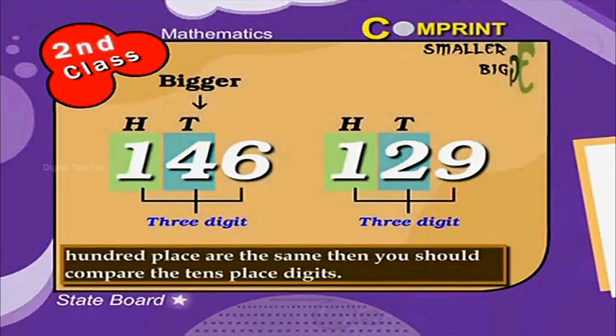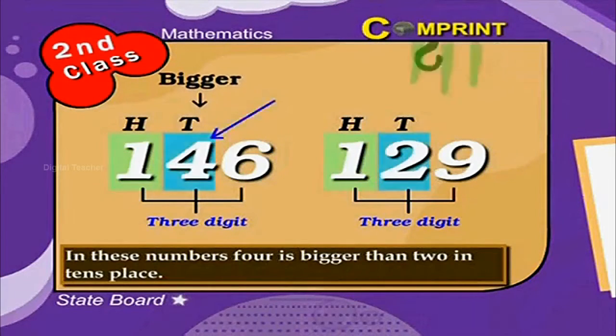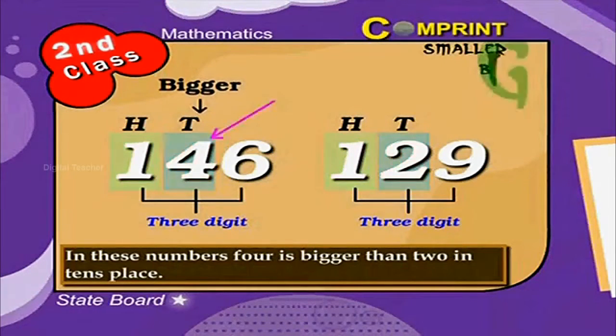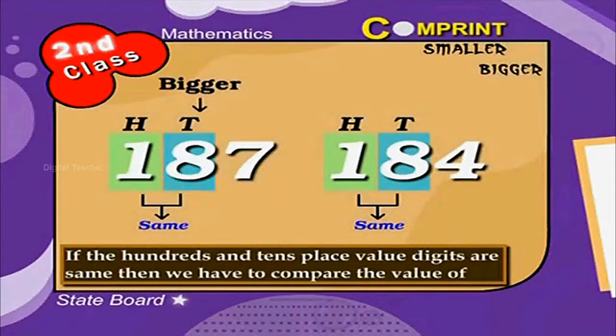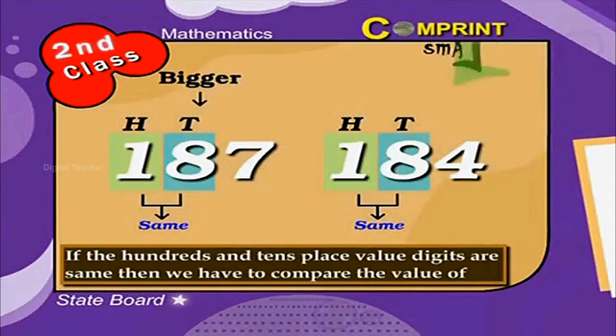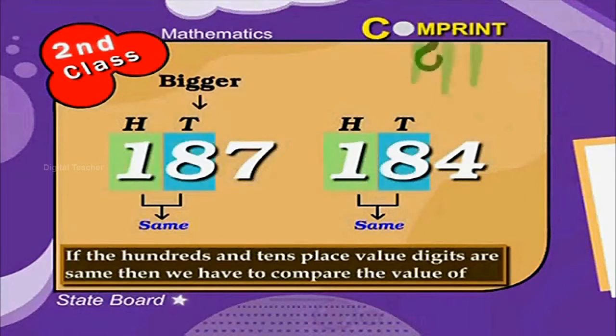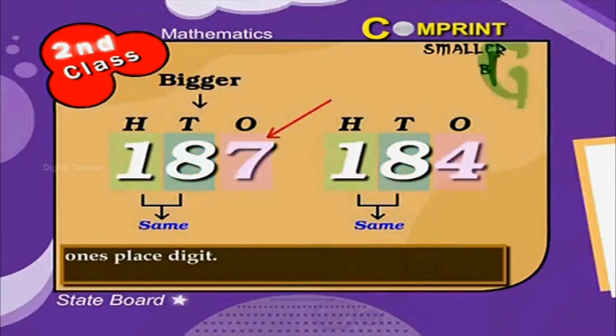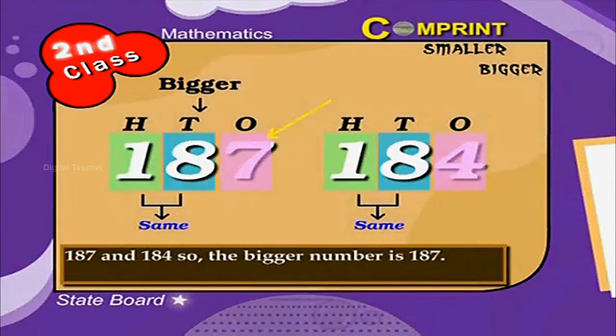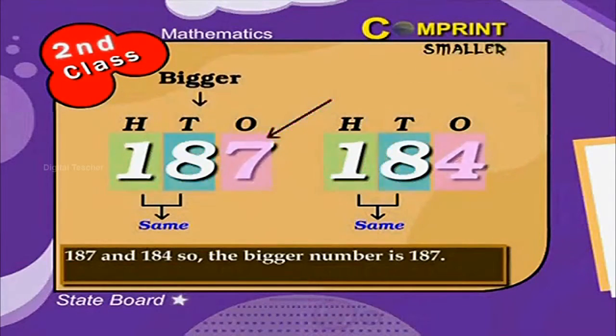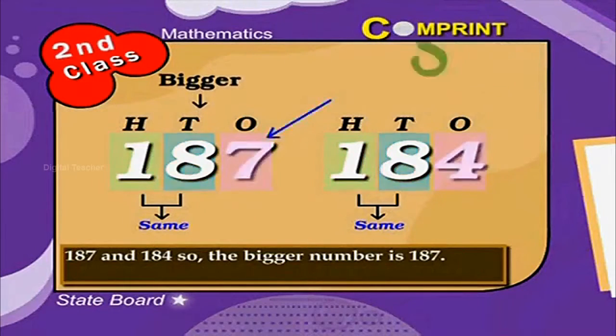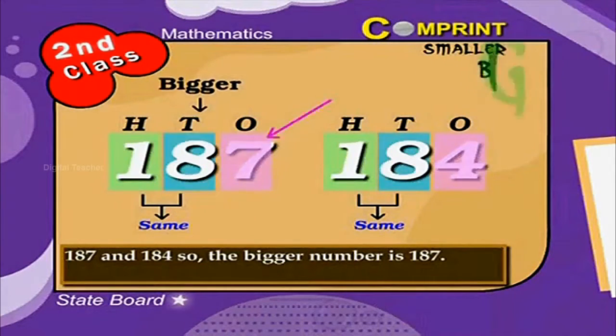In these numbers, 4 is bigger than 2 in the 10th place. For example, if the 100th and 10th place value digits are the same, then we have to compare the value of the 1's place digit. Here is an example: 187 and 184.